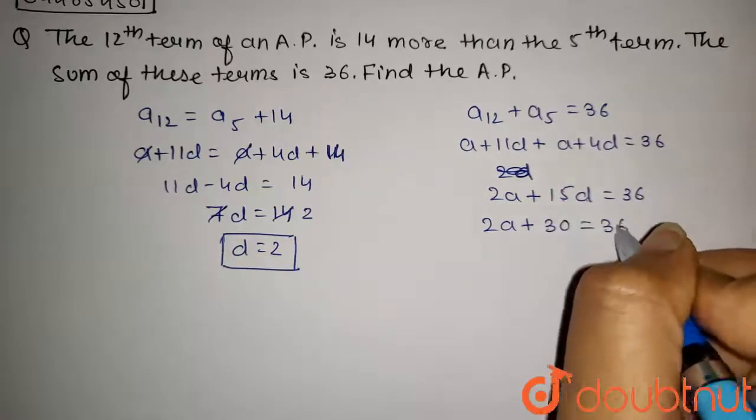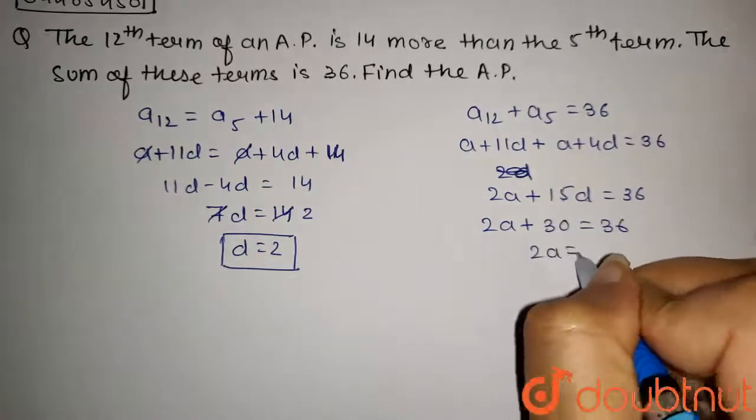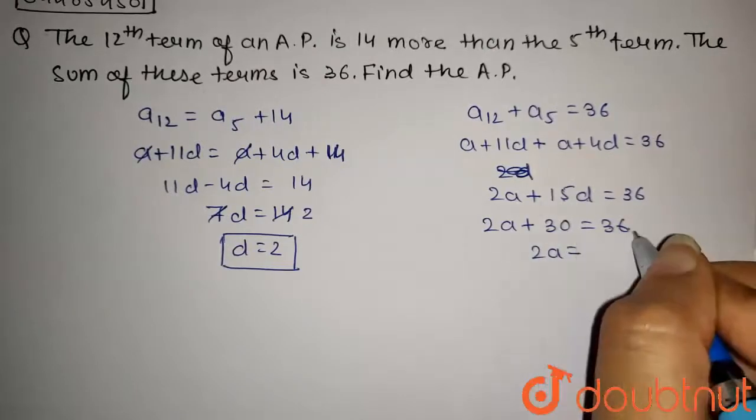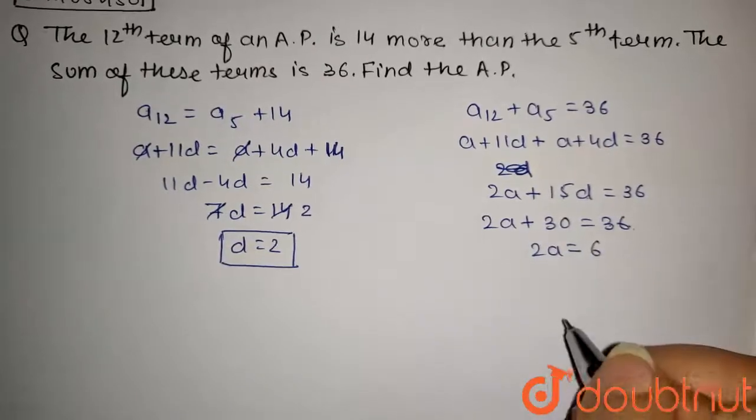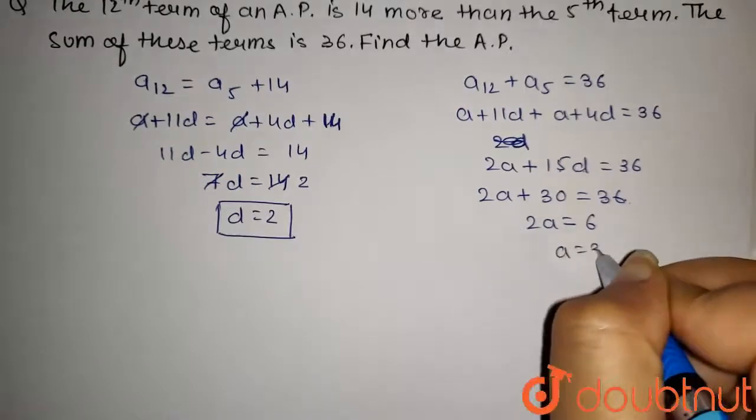Now, 2A will be equal to 36 minus 30, which gives us 6. So from this, we get A equals 3.